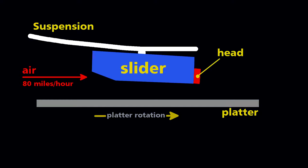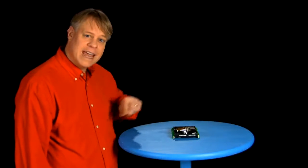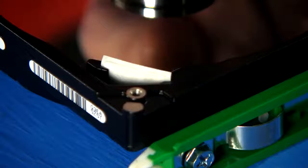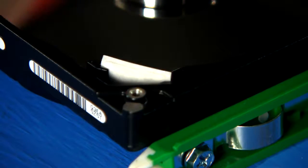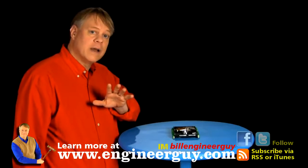If any disturbance causes the slider to rise too high, it floats back to where it should be. Because the head is so close to the disk surface, any stray particles could damage the disk, resulting in data loss. So engineers place this recirculating filter in the airflow. It removes small particles scraped off the platter.